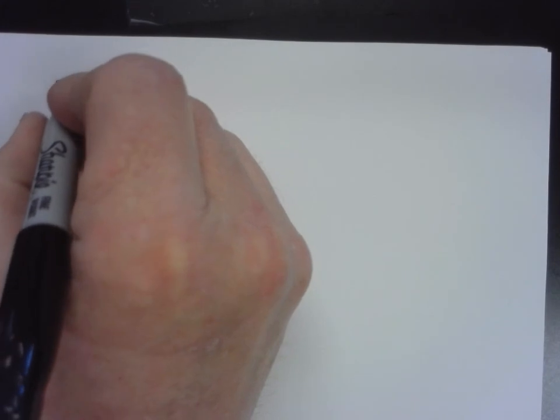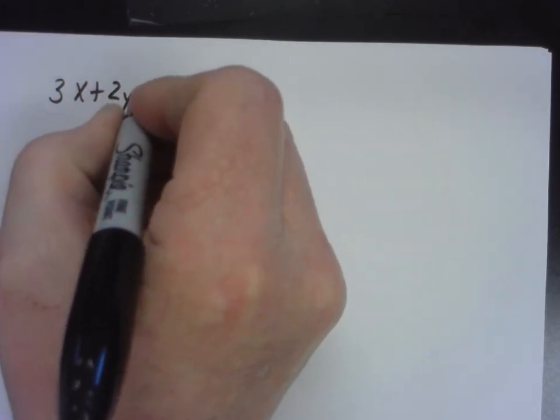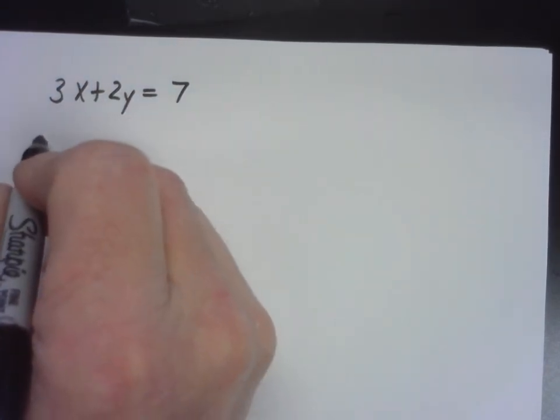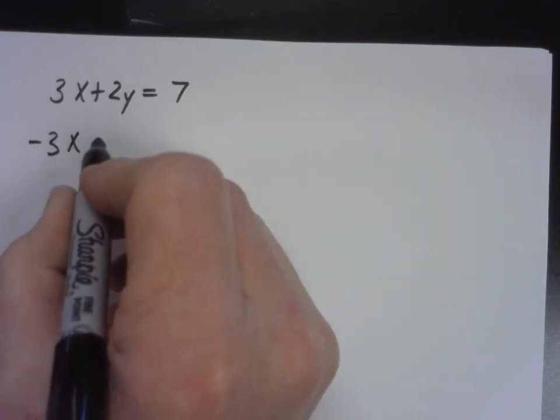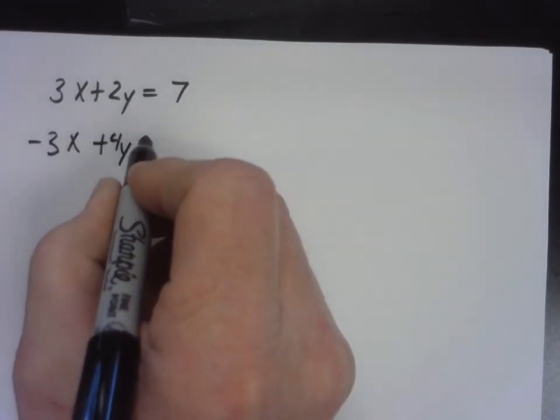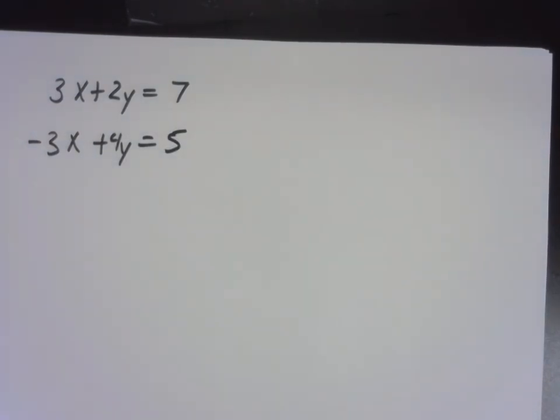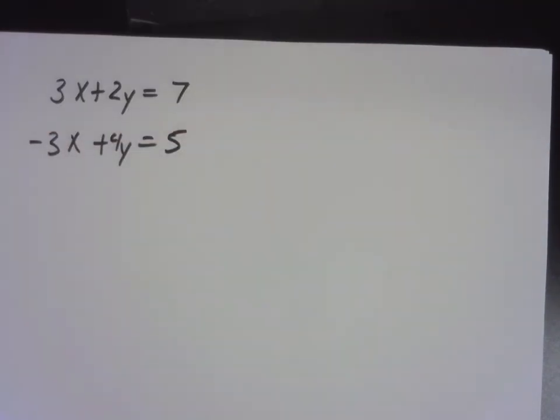Elimination works like this. Let's say I have an equation like 3x plus 2y equals 7. I have another equation like negative 3x plus 4y equals 5. Now, think about solving this by substitution. Probably not going to be very fun, is it? We're going to have to solve one of those two equations for either x or y. Are we going to end up with fractions? Yeah.